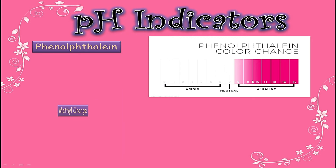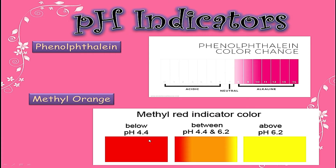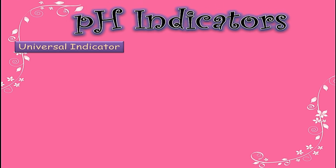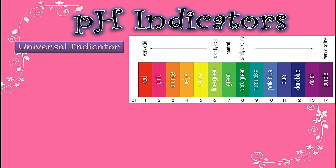Another pH indicator is methyl orange. Methyl orange remains red from pH 0 to 4.4, it remains orange from pH 4.4 to 6.2, and it remains yellow from pH 6.2 to 14. More accurate pH indicators are universal indicators, because these indicators can change their color on each pH value — showing red at pH 1, pink at pH 2, orange at pH 3, and so on for every pH value.